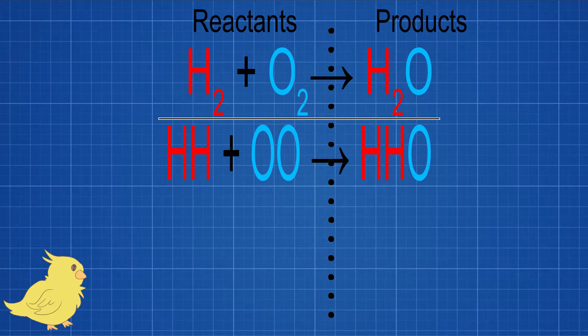Now we need to look and see how many we have got on each side. So let's start with our hydrogens. How many hydrogens have we got on the left of the dotted line, on the left hand side? We've got two. How many hydrogens on the right? We've got two. We're happy. What about oxygen? On the left we've got two, but on the right we've only got one.